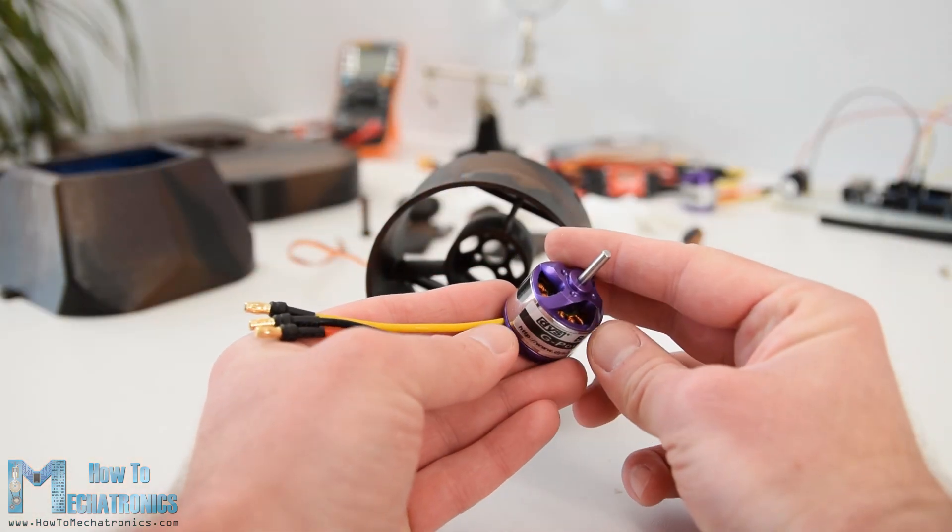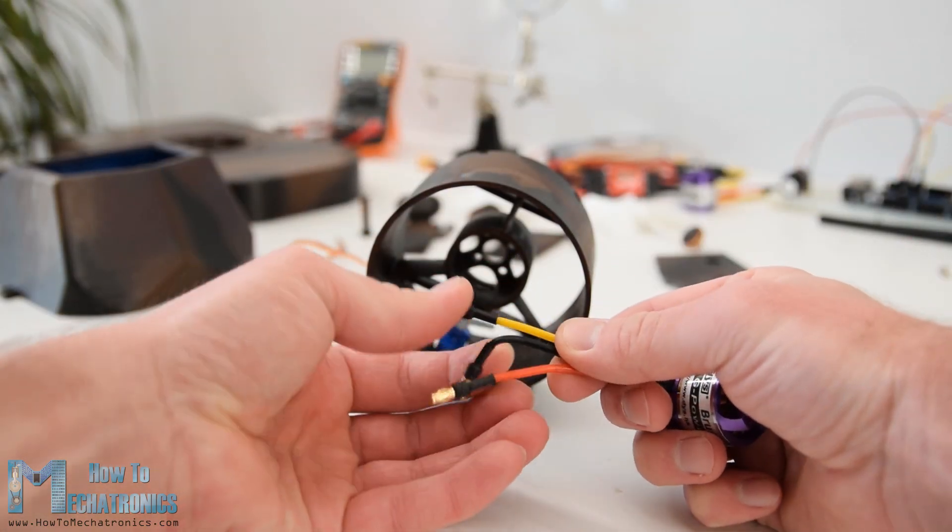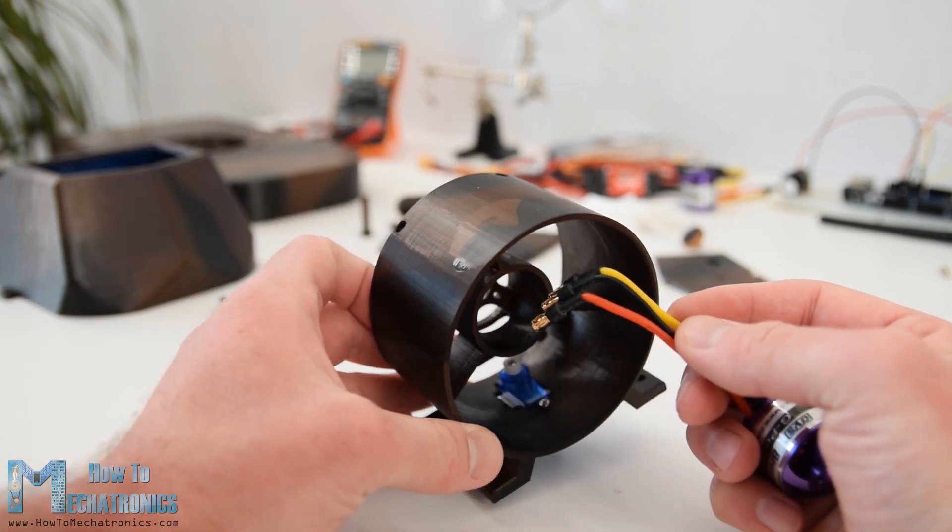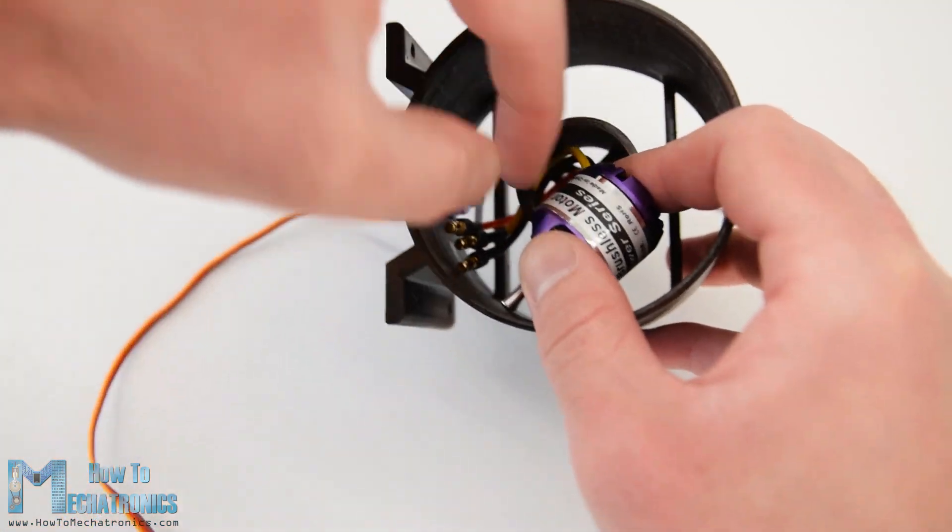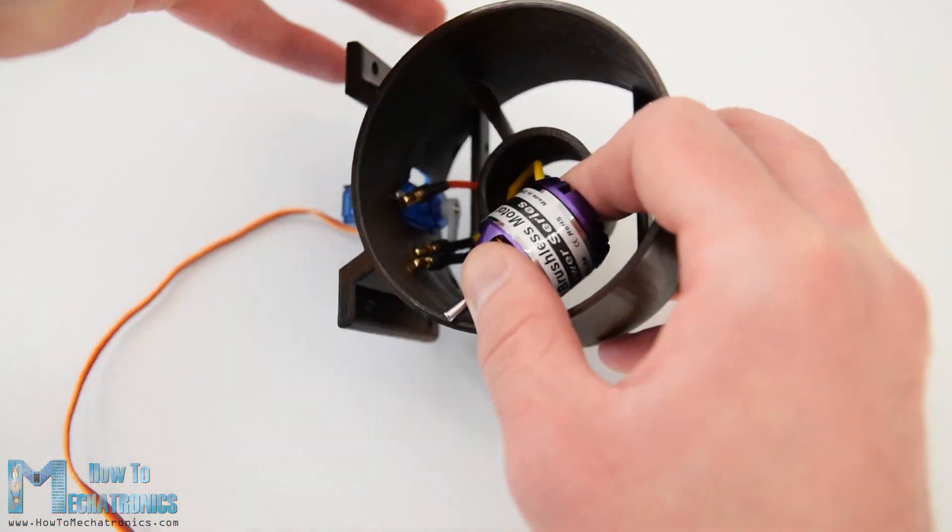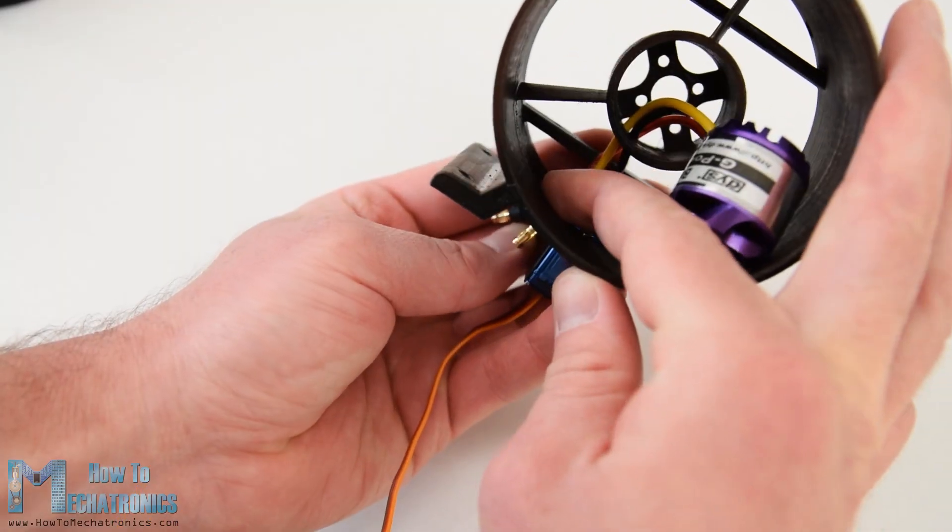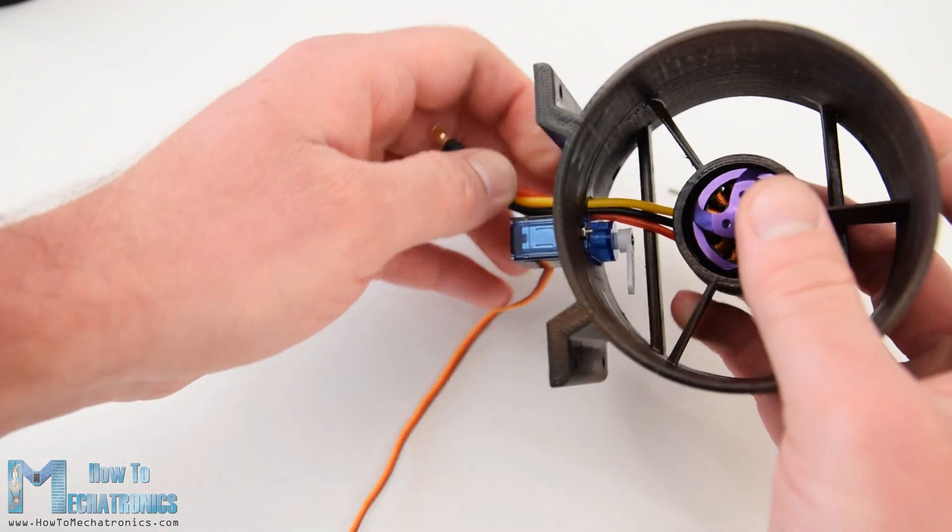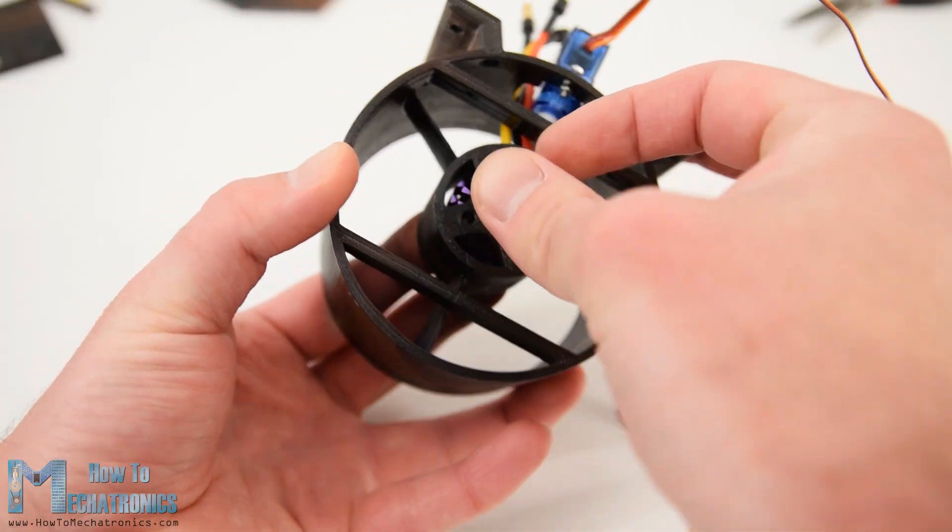Next is the brushless motor. The particular model that I have is the D2830, which has a diameter of 28mm and 30mm of length. And of course the housing is specifically designed to fit this motor. Here, when inserting the motor, first I had to pass the wires through the openings. It's a bit tight, but still manageable to pass them through. Then on the back side, using four M3 bolts, I secured the motor to the housing.